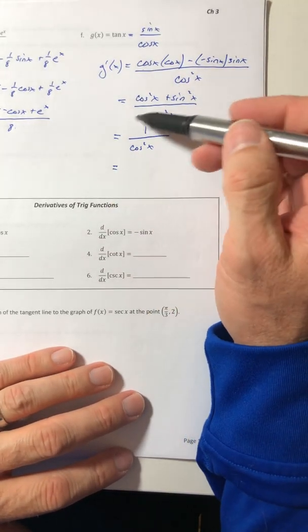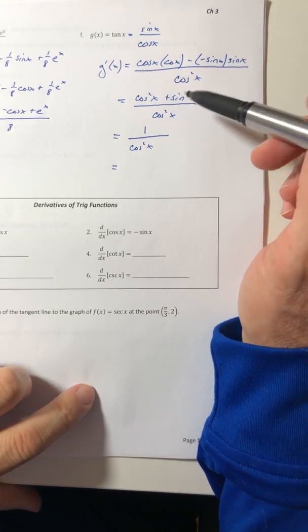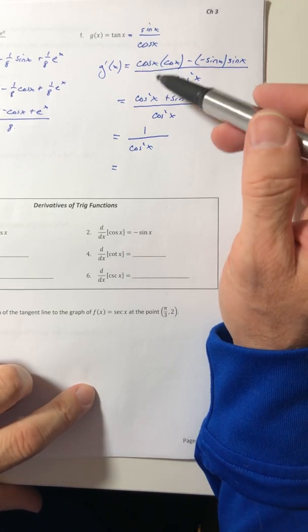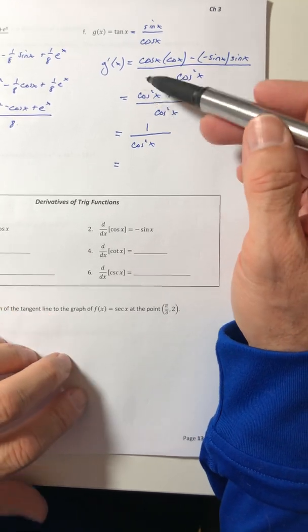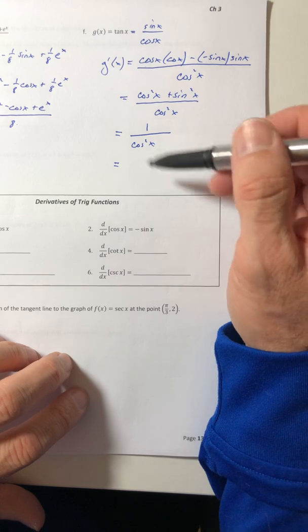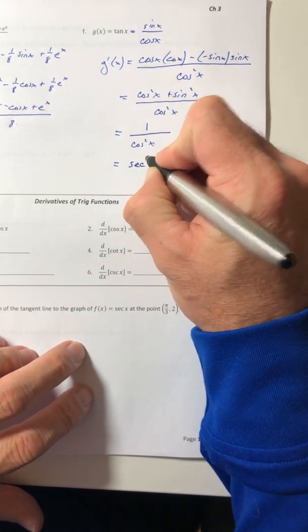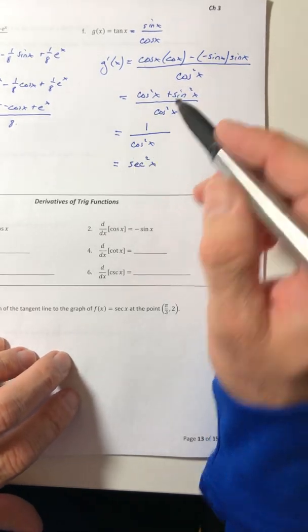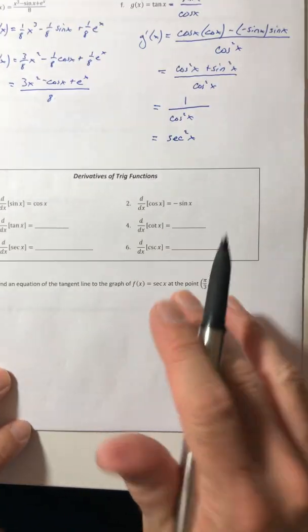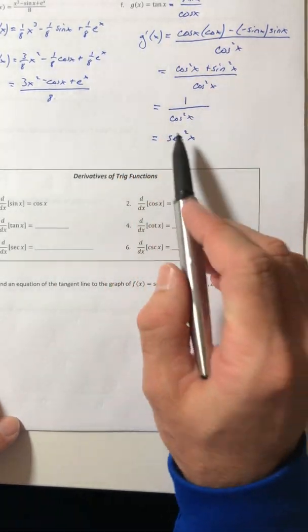So all of those identities that you guys learned in your trig class or precalculus or wherever, this is why you spend so much time learning them and going over them is because they do tend to show up from time to time in calculus. All right, and then one over cosine squared is secant squared. Okay, so this is the proof for tangent to get us derivative. You don't have to go through this every single time you see tangent.